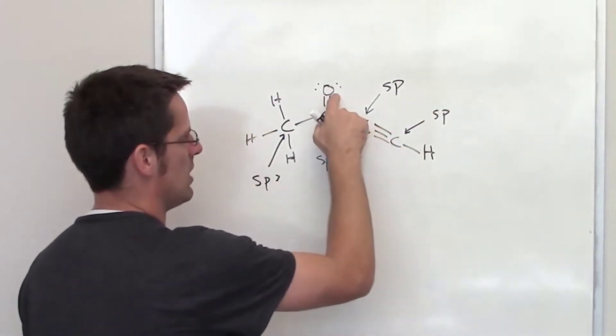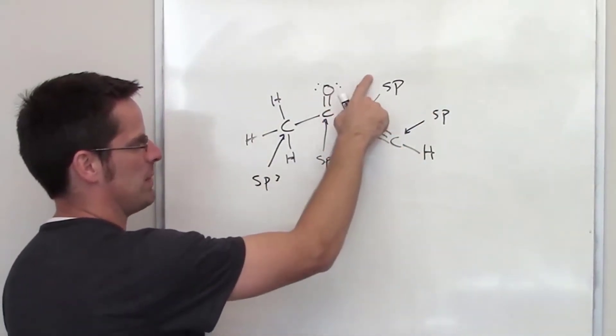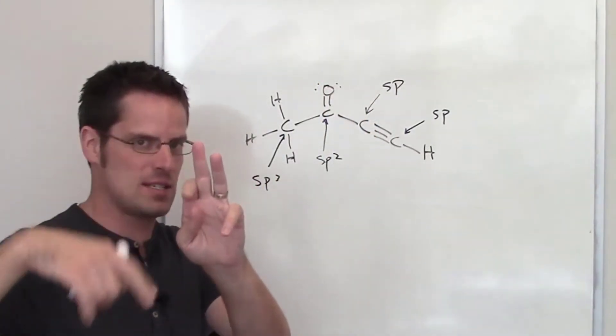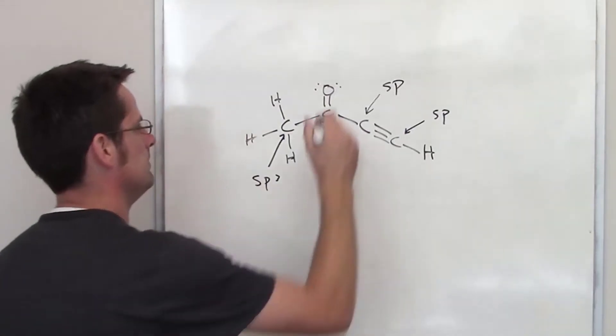Right here I have an oxygen. It has a carbon below it, a set of lone pairs to the right, a set of lone pairs to the left. That is three things, so it is sp2. Now, if we're asked to determine the bond angles,